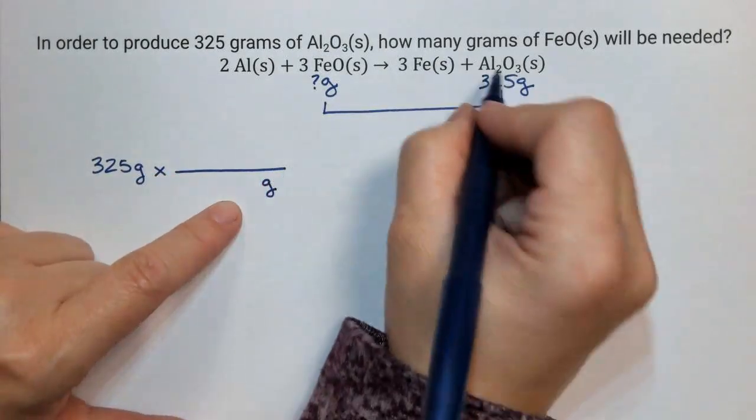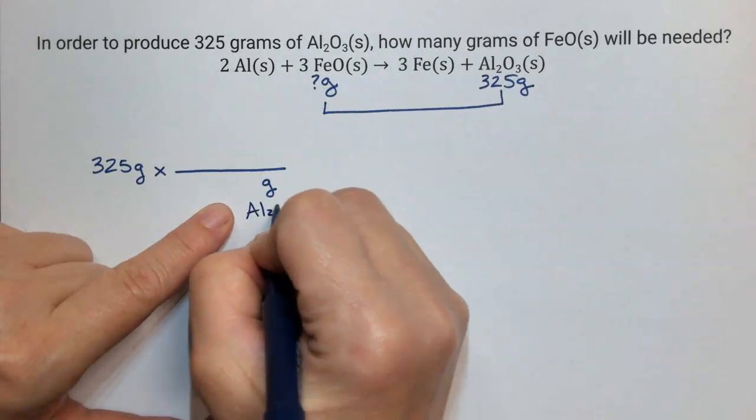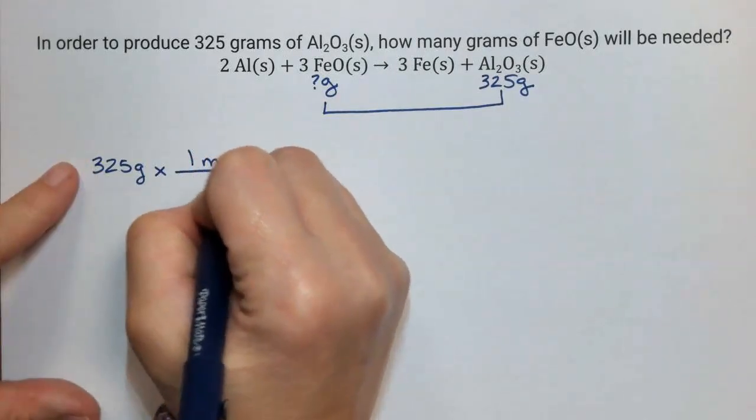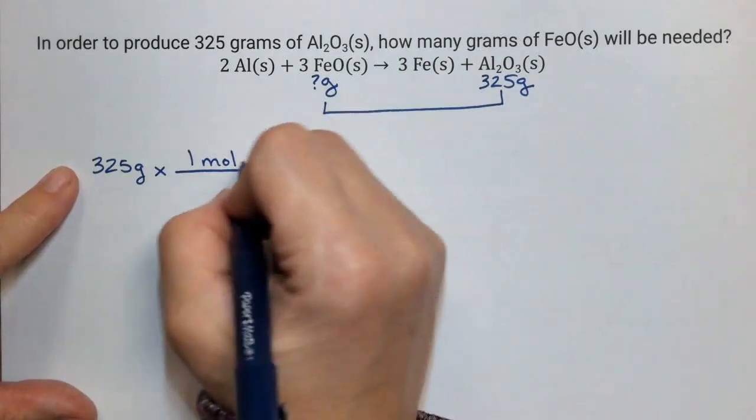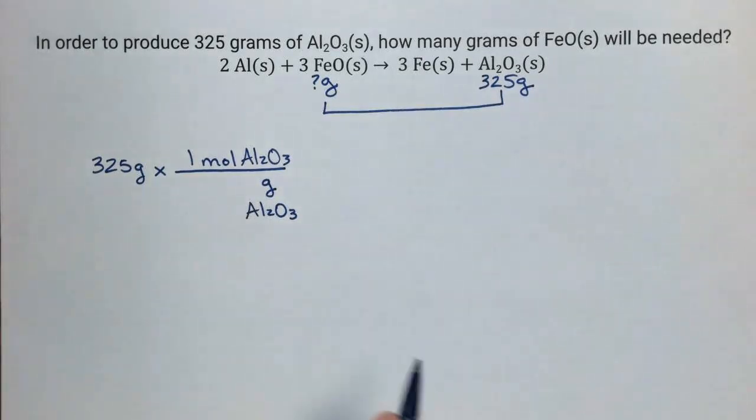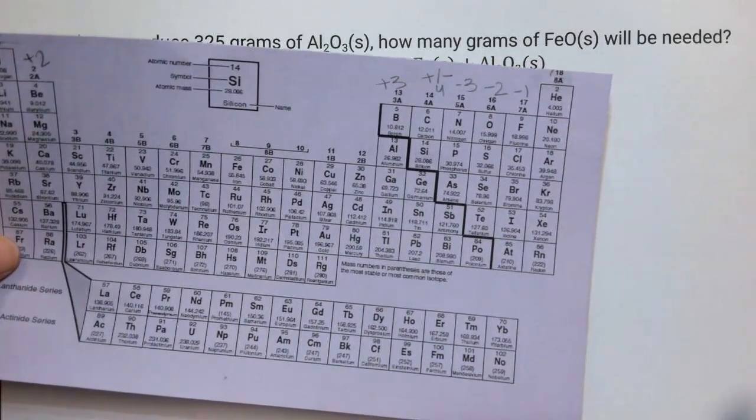bring down the grams of aluminum oxide, and I'm going to add it up on the periodic table. That's going to equal 1 mole of aluminum oxide. When I add up the mass of aluminum oxide on the periodic table,